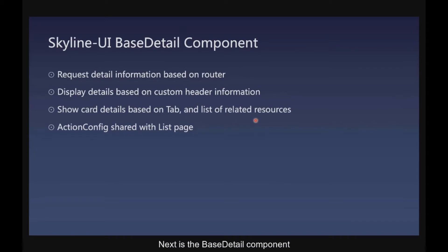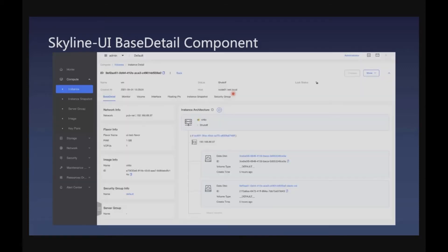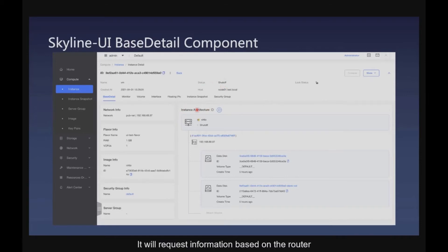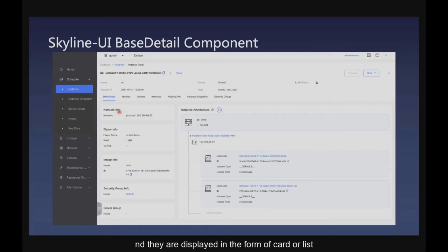Next is the base detail component. I will use the page to explain it. This is a resource detail page. It requests information based on the route. The page displays details based on a custom header, and more information is classified by tab. They are displayed in the form of card or list. The details page shares the same action configs as the list page.